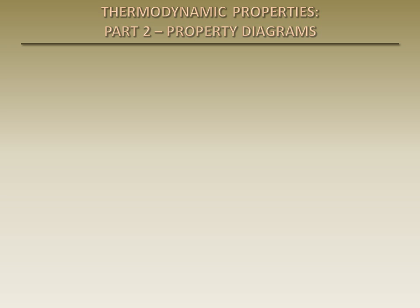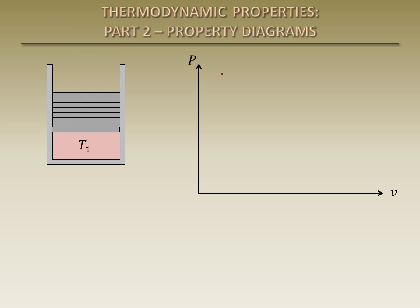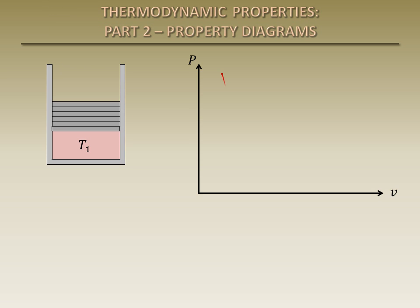We will now look at a different property diagram called a P-V diagram, which shows the pressure as a function of specific volume. This diagram is similar to the T-V diagram. Suppose that we have a piston-cylinder device which contains a compressed liquid at a fixed temperature T1 and at an elevated pressure. We slowly decrease the pressure by removing weight from the piston, and we allow heat transfer between the liquid and the surroundings such that the temperature remains constant. The pressure of the compressed liquid decreases and the specific volume increases until the substance becomes a saturated liquid, at which point any more energy added will result in the start of vaporization. The pressure at this point is called the saturation pressure.